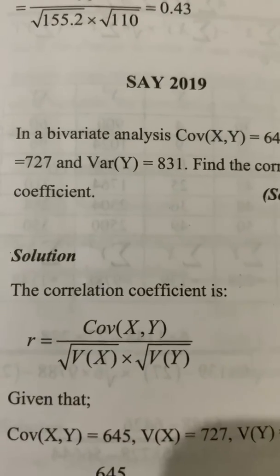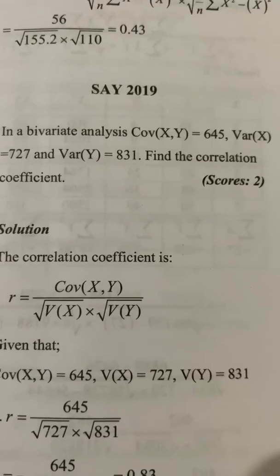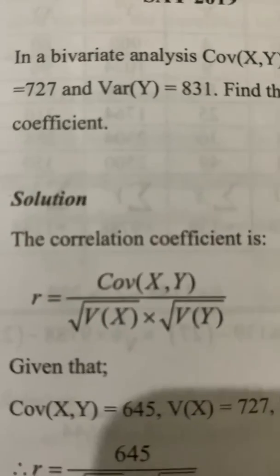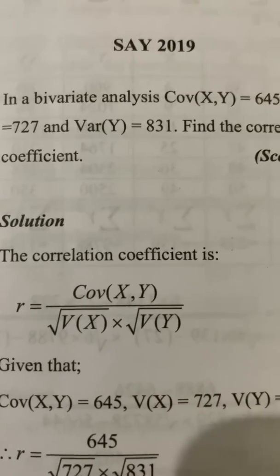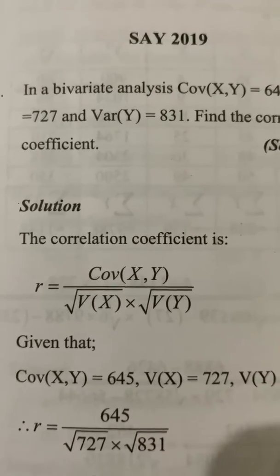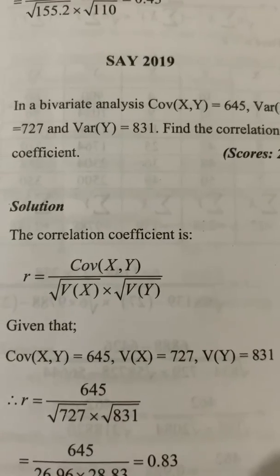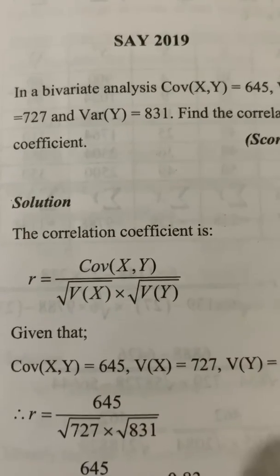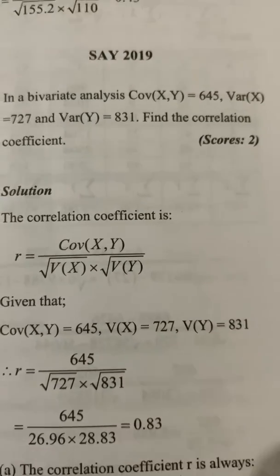The next question gives a bivariate analysis with covariance of XY, variance of X, and variance of Y. Find the correlation coefficient. The formula is: r equals covariance(xy) divided by the square root of variance(x) times the square root of variance(y). The square root of variance of x is the standard deviation of x. We substitute the given values to find r.